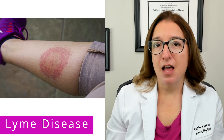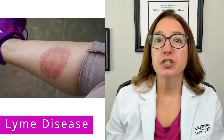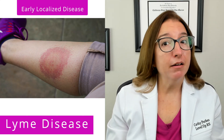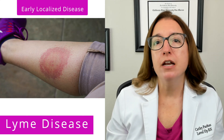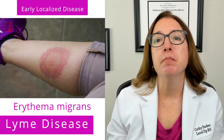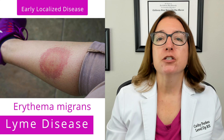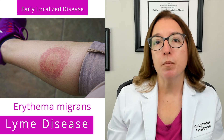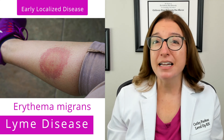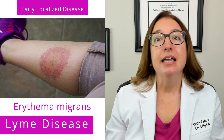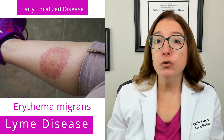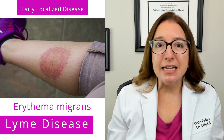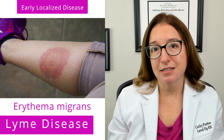During the first stage of Lyme disease, which is the early localized disease stage, many but not all people will develop a red rash called erythema migrans. This is a circular rash that typically isn't itchy or painful and sort of looks like a bullseye. In addition, patients may have flu-like symptoms such as a low-grade fever, malaise, headache, and muscle aches.